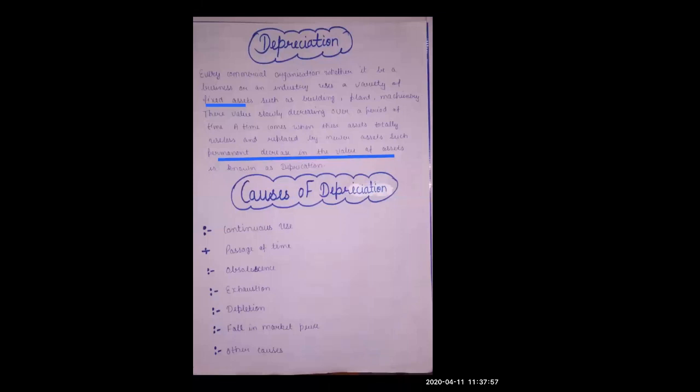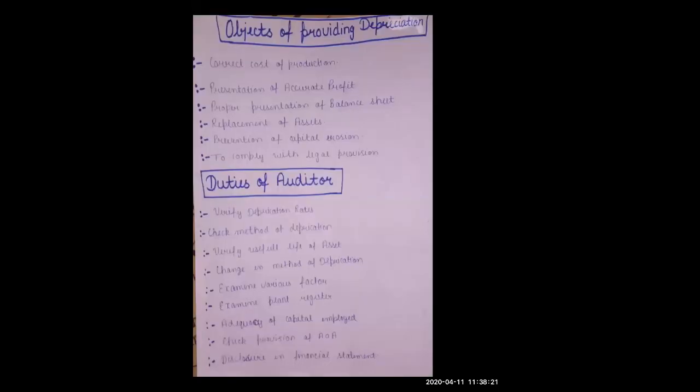Fifth, the auditor must examine various factors related to depreciation. Sixth, the auditor must examine the plant register — if a company has maintained a plant register, the auditor checks how much depreciation has been shown against each asset.